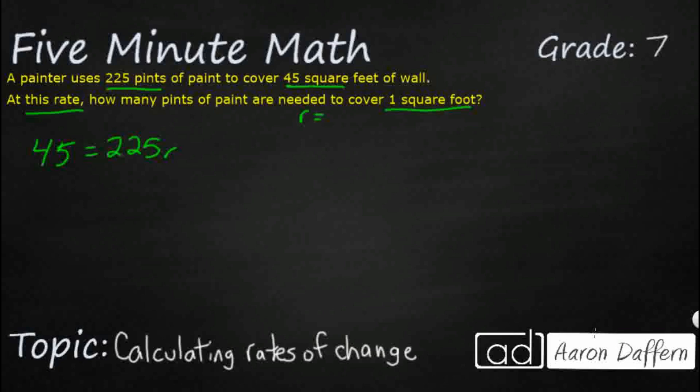So we've got our 225 pints hits our 45. And we multiply that by r, which we'll just say r is our rate. So whatever that coverage rate is, is going to be r. Multiply that by 225 pints. And that gets us to our total of that 45 square feet.